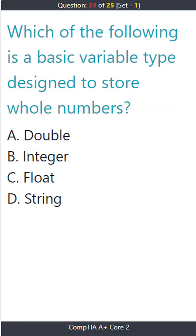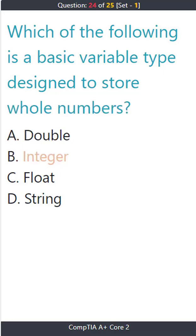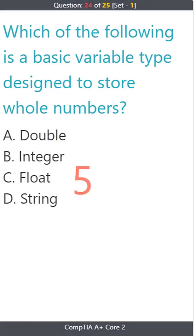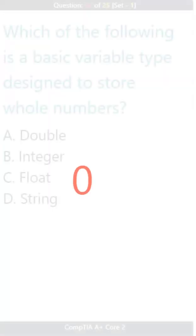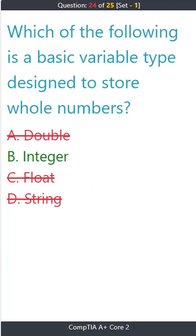Question 24: Which of the following is a basic variable type designed to store whole numbers? A) double. B) integer. C) float. D) string. The correct answer is B: integer.